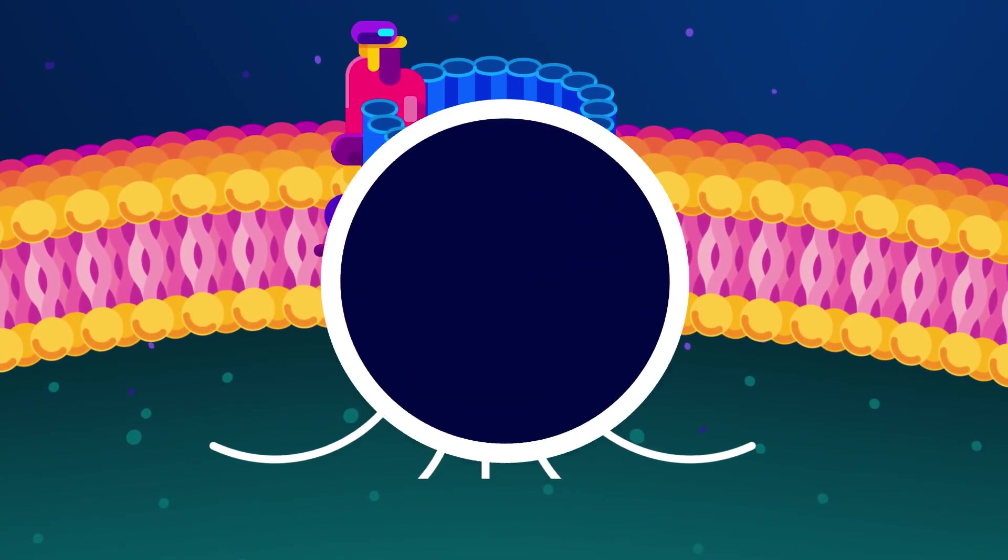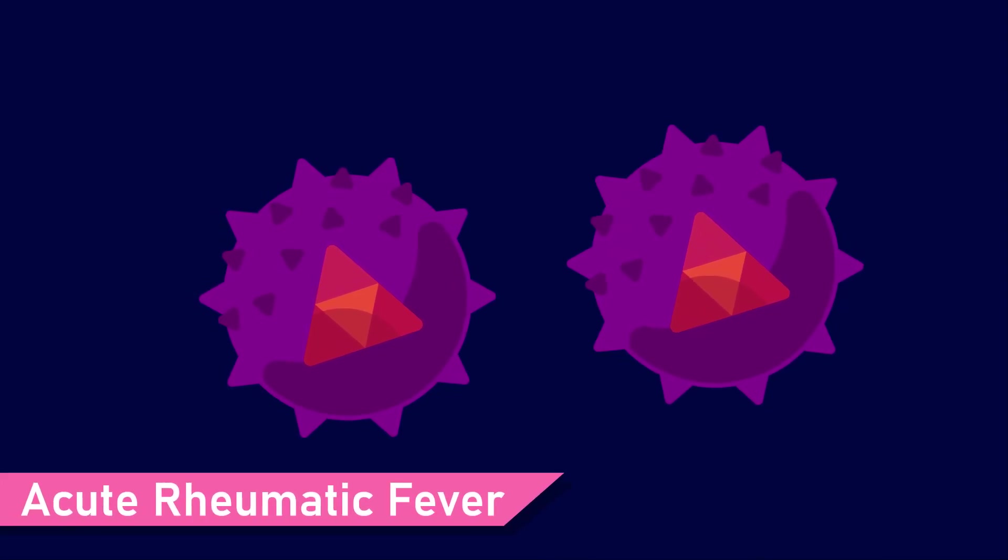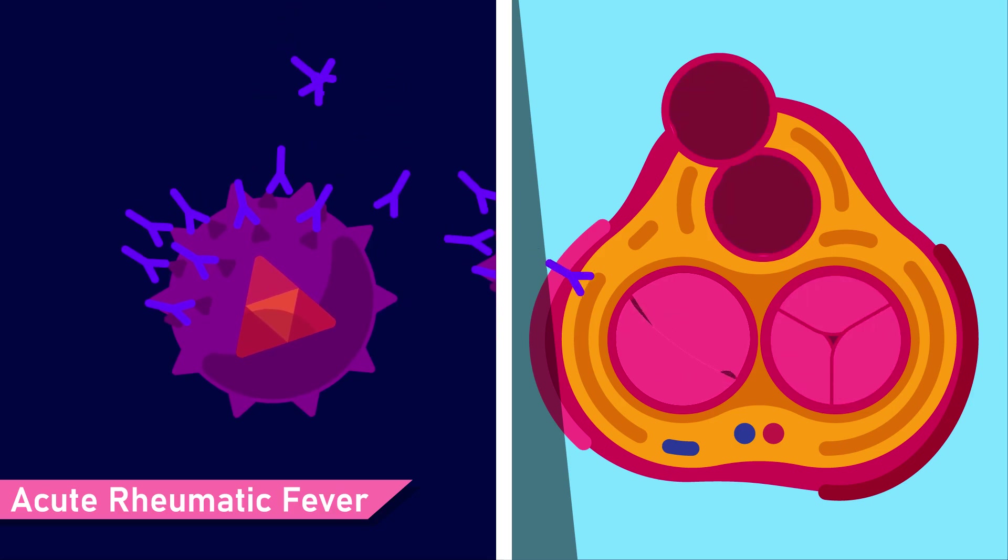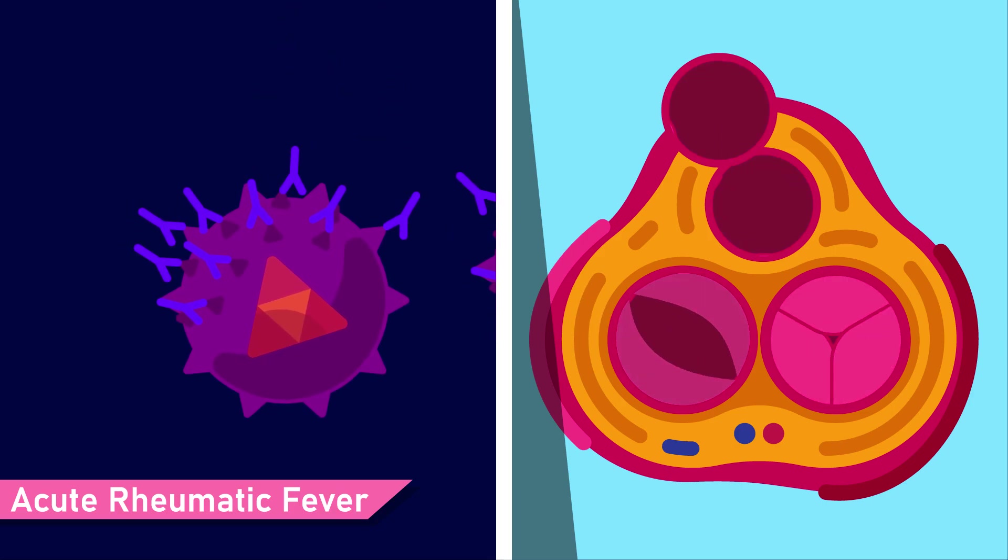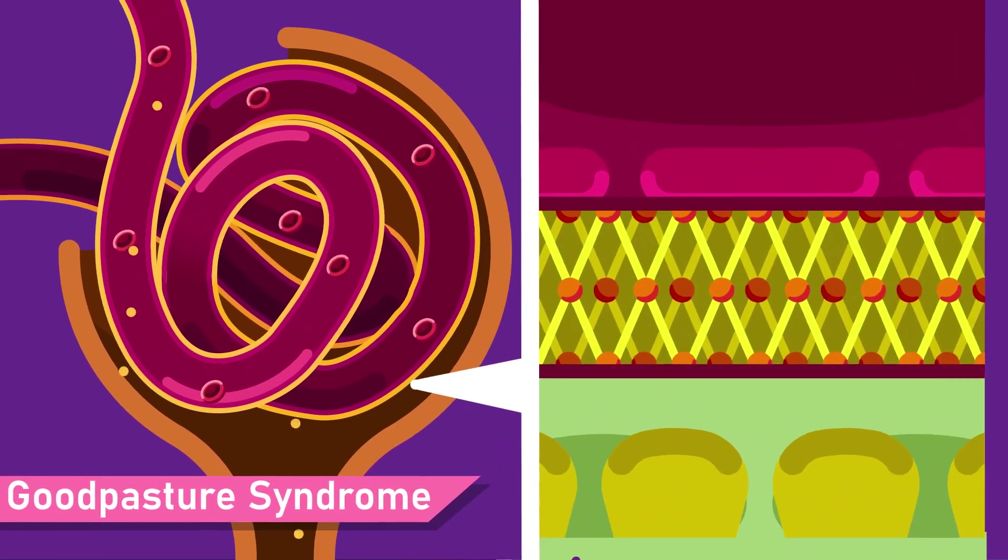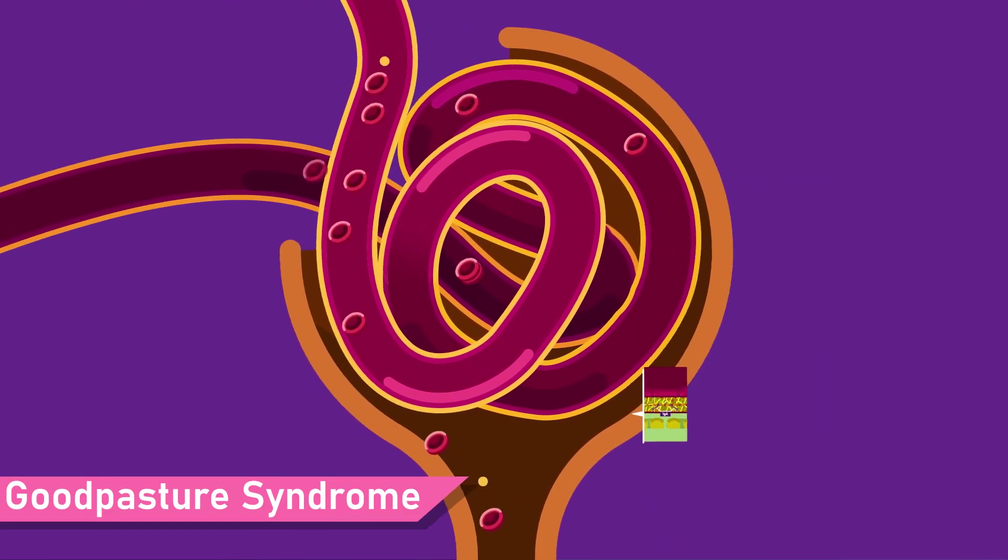The examples of type 2 hypersensitivity are: 1. Acute rheumatic fever, when the antibody for streptococcal cell wall antigens reacts with the myocardial antigen. 2. Goodpasture syndrome, when the antibody reacts with type 4 collagen in the basement membrane of glomeruli of kidneys and alveoli.